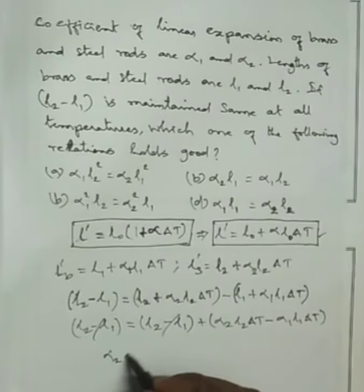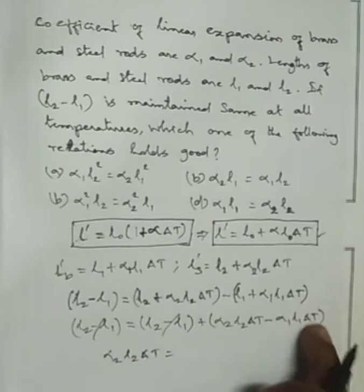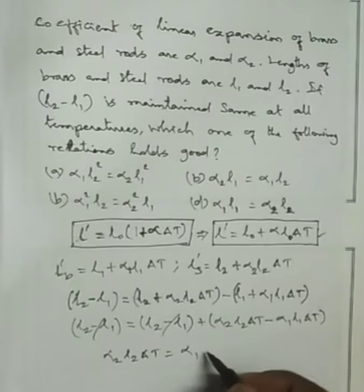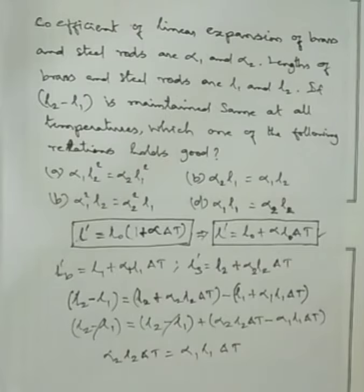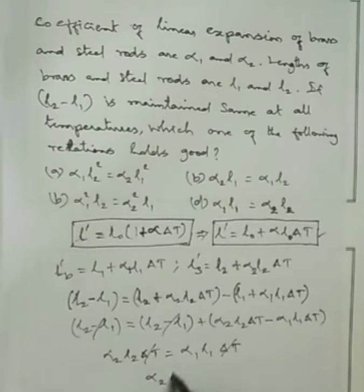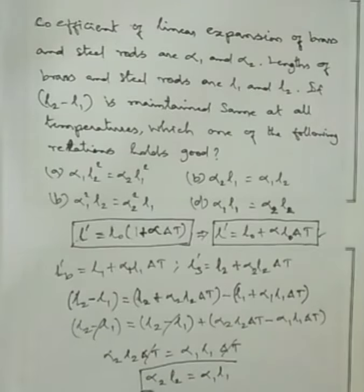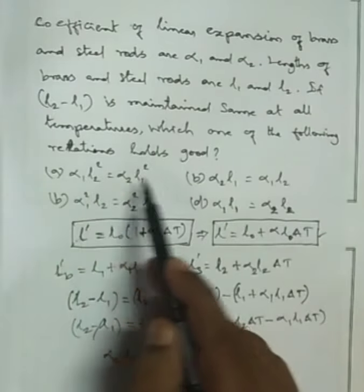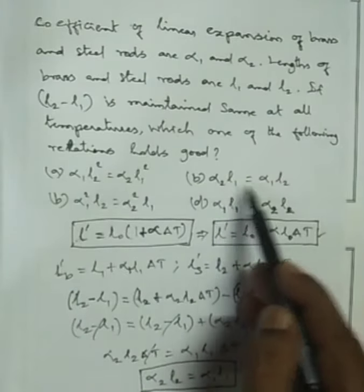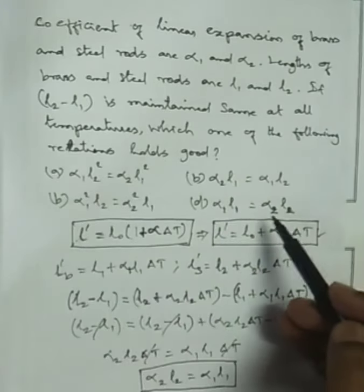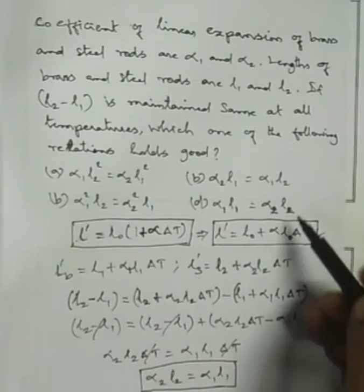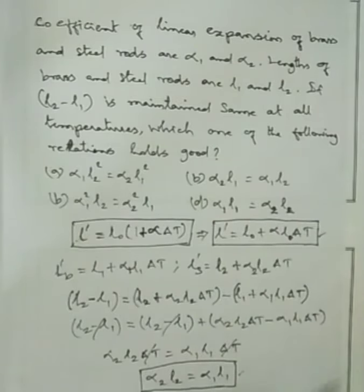After cancelling delta t, we get alpha2 L2 equals alpha1 L1. So this is the relationship: alpha1 L1 equal to alpha2 L2.